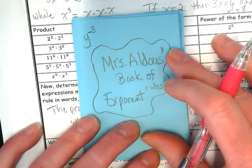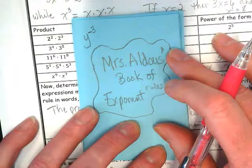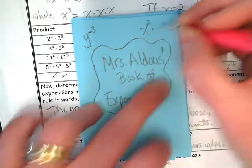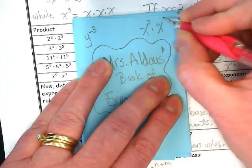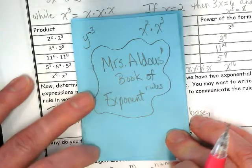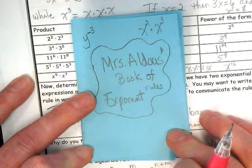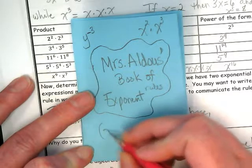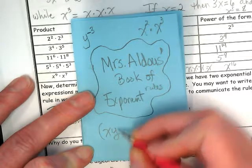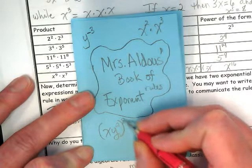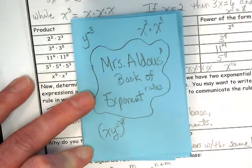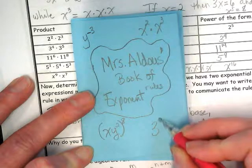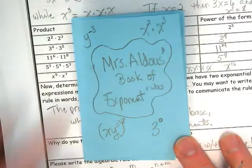Put a y to the negative 3. x squared times x to the third. What about when we have something like xy squared to the eighth power? Or an exponent that's a zero. There's a special rule for that.